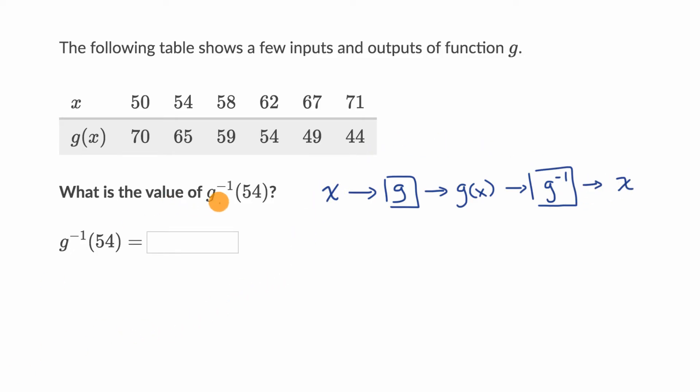So what we're focused on right over here is g inverse of 54. We can think about this part of this little chain that we set up. What we're inputting into this inverse function is 54. So what we want to say is, when g of x is equal to 54, what is x?